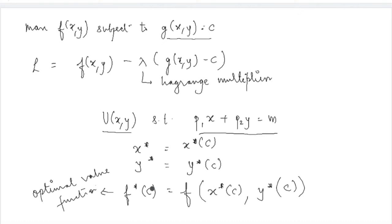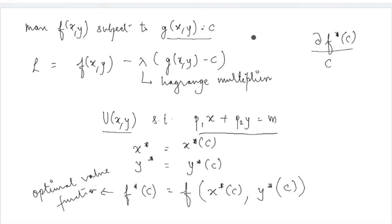Since this optimum value is dependent on the constraint constant c, it is important to understand that if the value of c changes, what will be the change in the optimum value function — the change in the objective function. A very important result in this context is that this derivative, df*(c)/dc, is equal to the value of lambda evaluated at c.